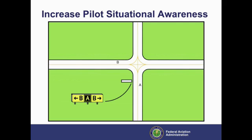While it's not always possible, the ideal intersection is a 90-degree cross like the example shown here, with taxiway B intersecting taxiway A at a 90-degree angle. This design maximizes visibility to the crossing taxiway and clearly designates the through taxiway.